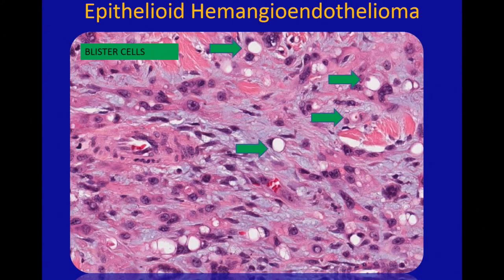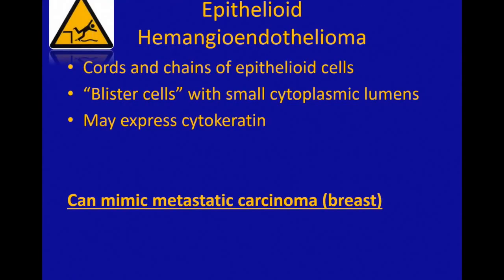That's why these tumors originally, when they were described in the lung, people for a long time thought EHE was an unusual form of carcinoma. My mentor, Dr. Weiss, was the first person to realize that these were vascular tumors and to name it epithelioid hemangioendothelioma in 1982. So these can be tricky — they don't necessarily look like a vascular tumor at first glance.